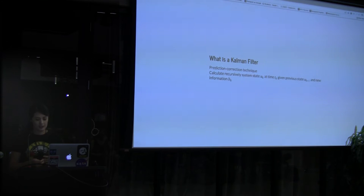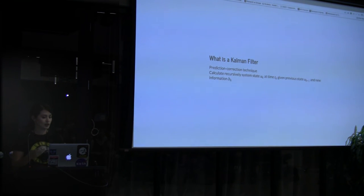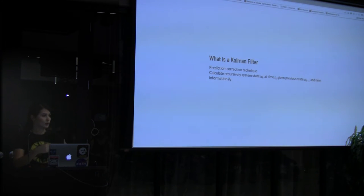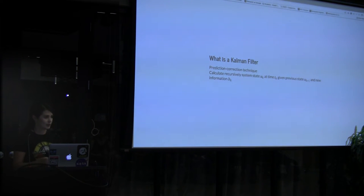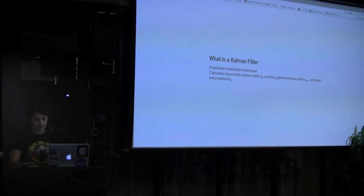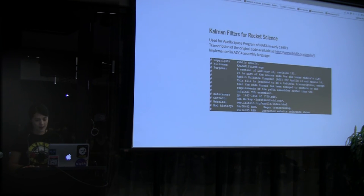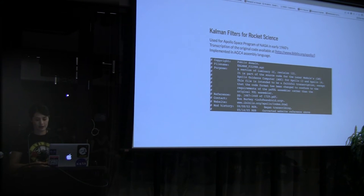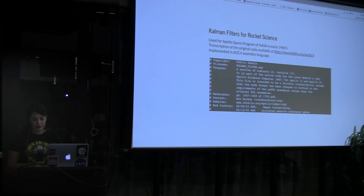It's a prediction-correction technique by which we recursively calculate the state of a dynamical system — we call this UK at some time TK — given the previous state of the system and new observations coming in. This has been described as deceptively simple because the implementation is very simple, but the analysis behind it is not. This paper was published in 1960, partially supported by the US Air Force. The Kalman filter was first applied to trajectory estimation for the Apollo mission and was incorporated into the Apollo space navigation computer.